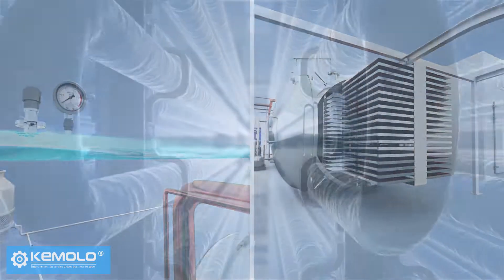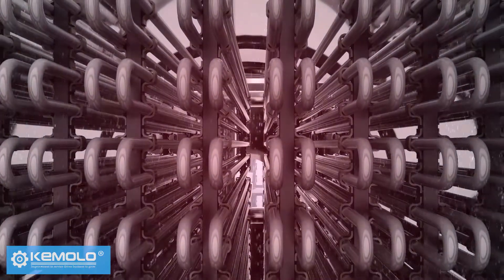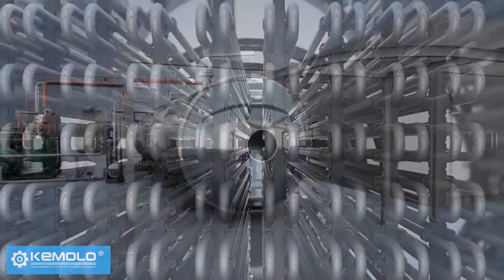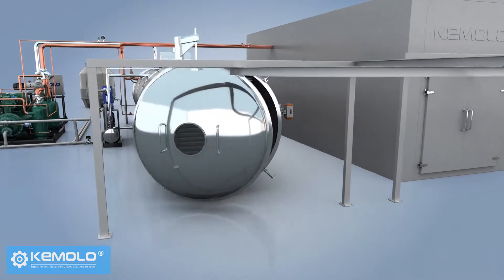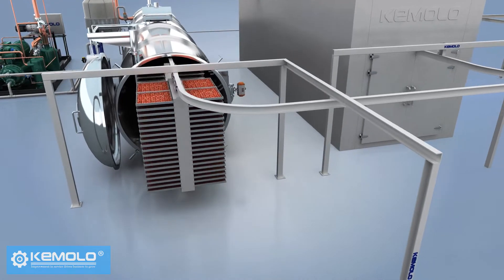After discharging, the frost on the water vapor collector needs to be defrosted for the next batch of production. Therefore, the freeze drying must be produced in batches and the interval between each batch is about 1-2 hours.